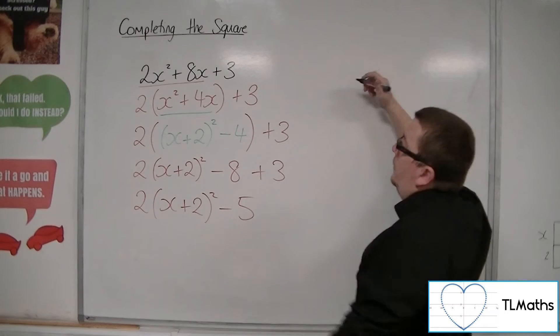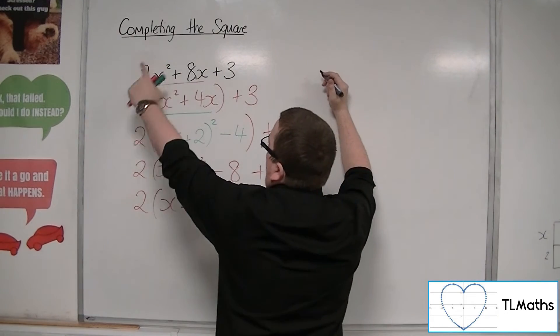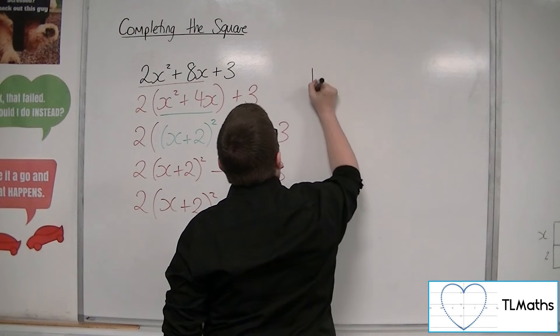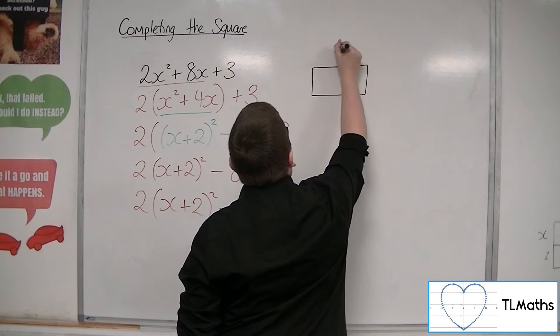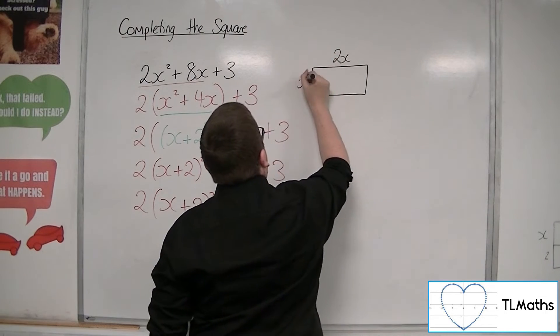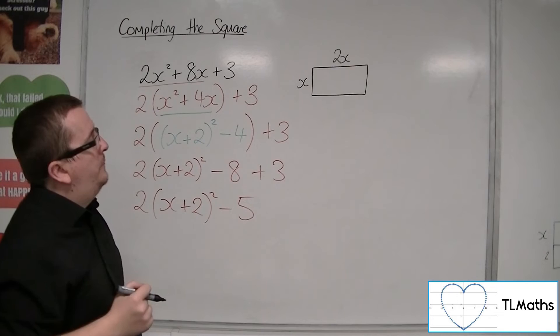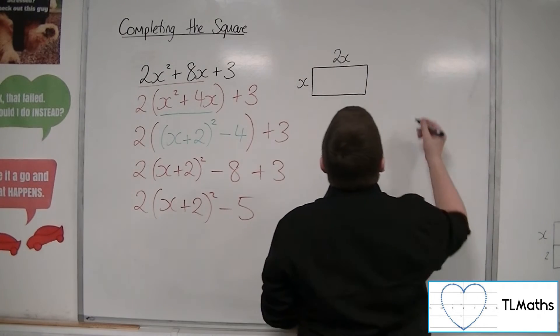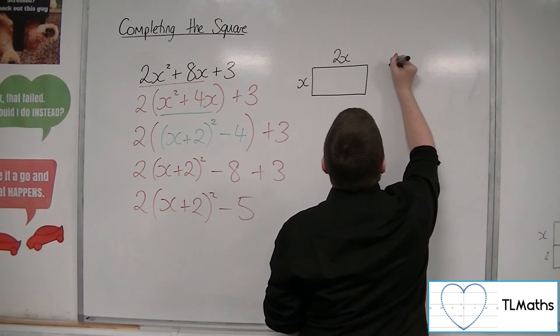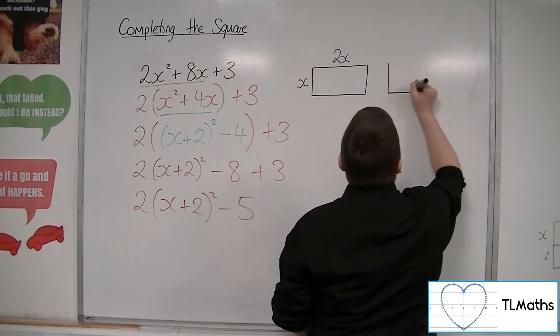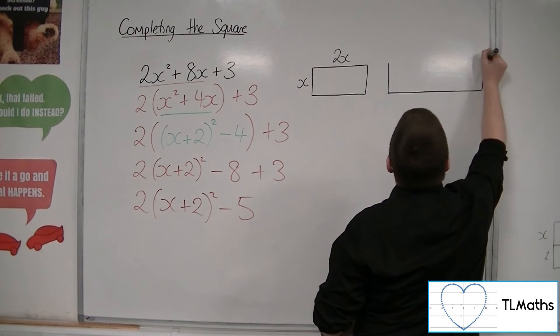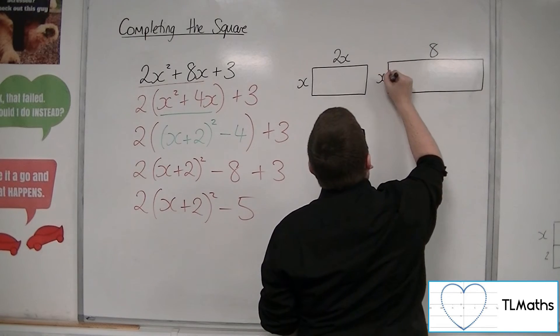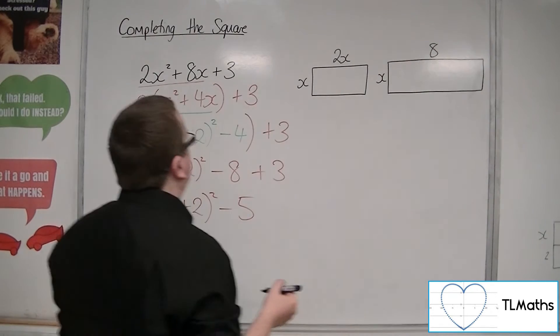The idea would be that I would have 2x squared. So I'd have to have a rectangle that is of length 2x and depth x, or width x. And then I've got 8x, so it must have length 8, whatever that is, and width x.